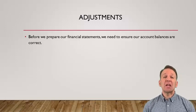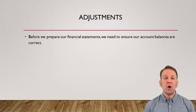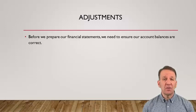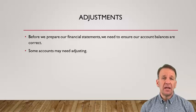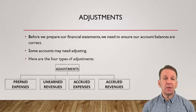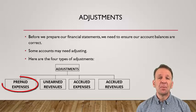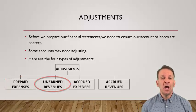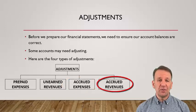At the end of the accounting period, before we prepare the financial statements, we need to ensure that the accounts have the correct balances. Some accounts might need adjusting. Here are the typical accounts that might need adjusting: prepaid expenses, unearned revenues, accrued expenses, and accrued revenues.